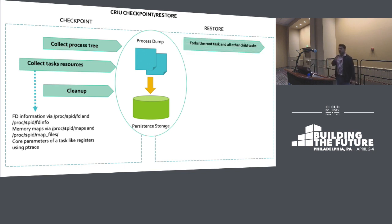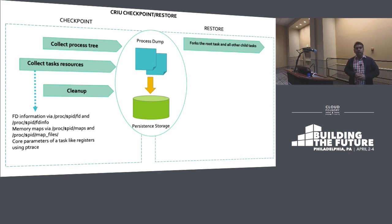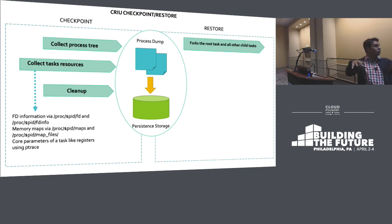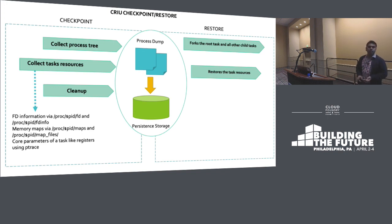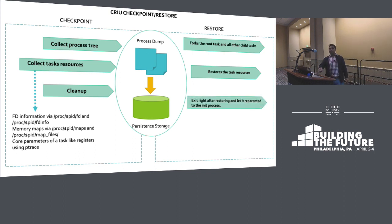At restore, CRIU comes up as a process, then forks the root process and all subsequent child processes — the entire process tree — and attaches it to itself, making CRIU the parent of the whole process tree. It then restores all task resources associated with the process tree: all memory pages, TCP connections, everything. Finally, CRIU detaches the entire process tree from itself and attaches it back to the init process so it can smoothly run.